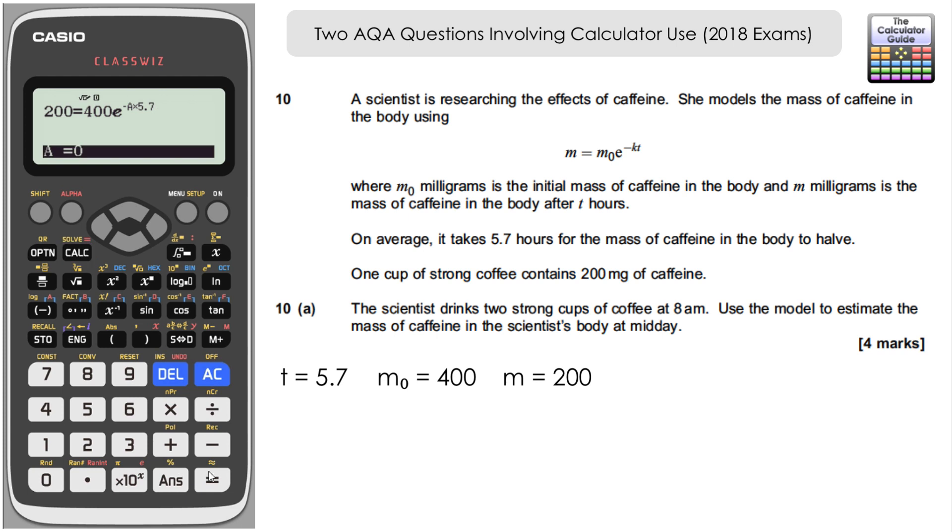Now all we need to do to find out the value of k is shift and solve. We're prompted that we want to solve for A, yes we do. Press equals and here we have our value of A, hence our value of k: 0.1216 to four decimal places and so on. That's actually going to be stored in A so we can use it in a subsequent calculation. It's probably worth writing that down just for confirmation for the examiner. But we didn't have to rearrange the equation to do that. We didn't have to introduce logarithms. We can just let the calculator solve it for us.